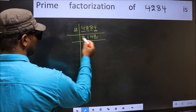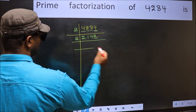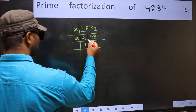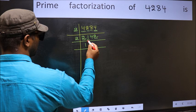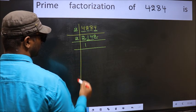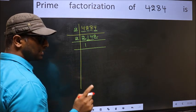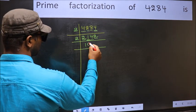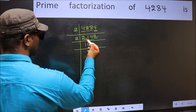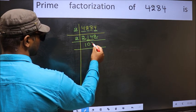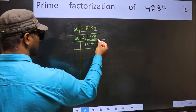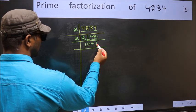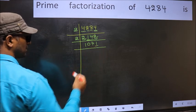Now the last digit is even, so take 2 again. First number 2 — when do we get 2 in the 2 table? 2 times 1 is 2. The other number 1 is smaller than 2, so take 2 numbers: 14. Remember, whenever you are taking 2 numbers, compulsory put 0. Now, 14 — when do we get 14 in the 2 table? 2 times 7 is 14. The other number 2 — 2 times 1 is 2. Now the last digit is 1, not even, so not divisible by 2.